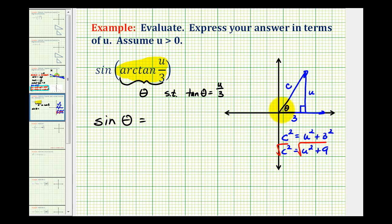Because we know the hypotenuse is always positive, we're only going to find the principal square root. So c is going to be equal to the square root of u squared plus nine.